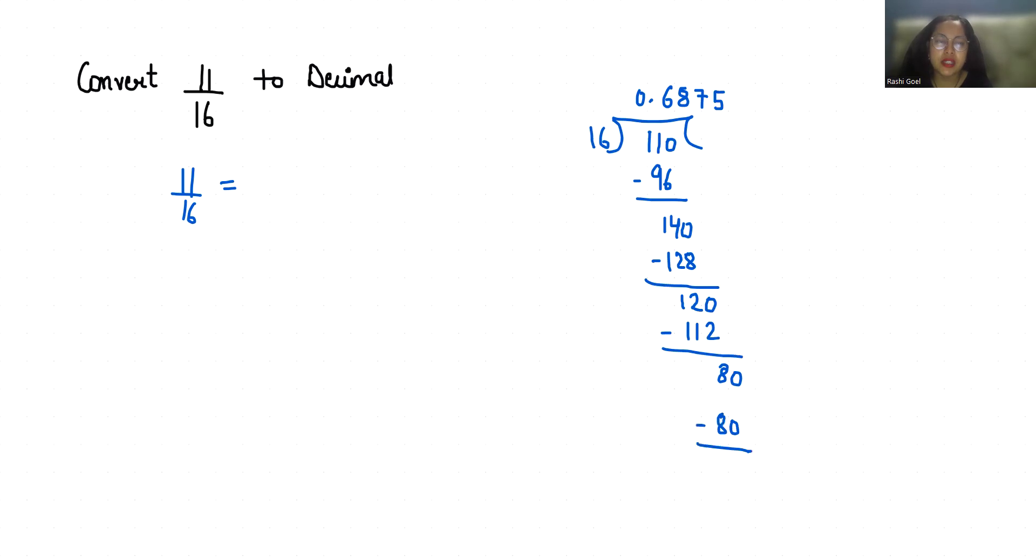So we get 0. So 11 by 16 in decimal form is 0.6875.